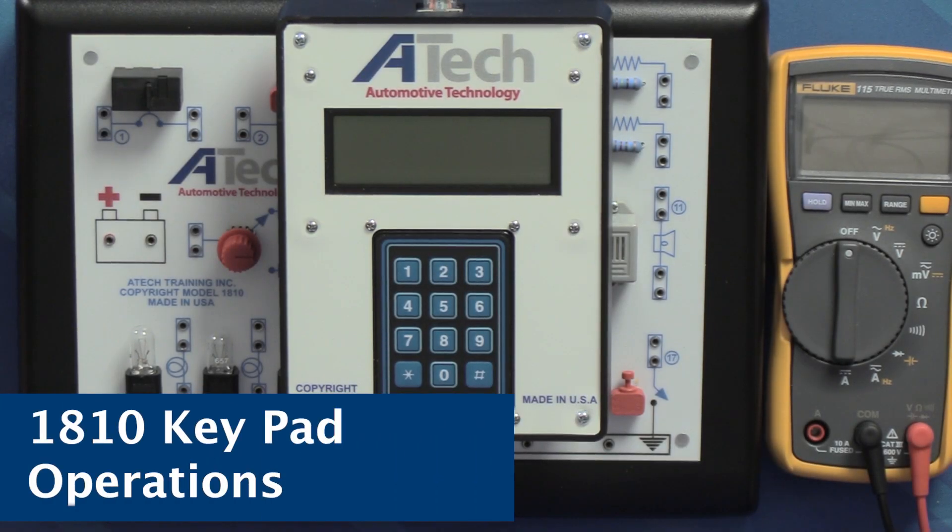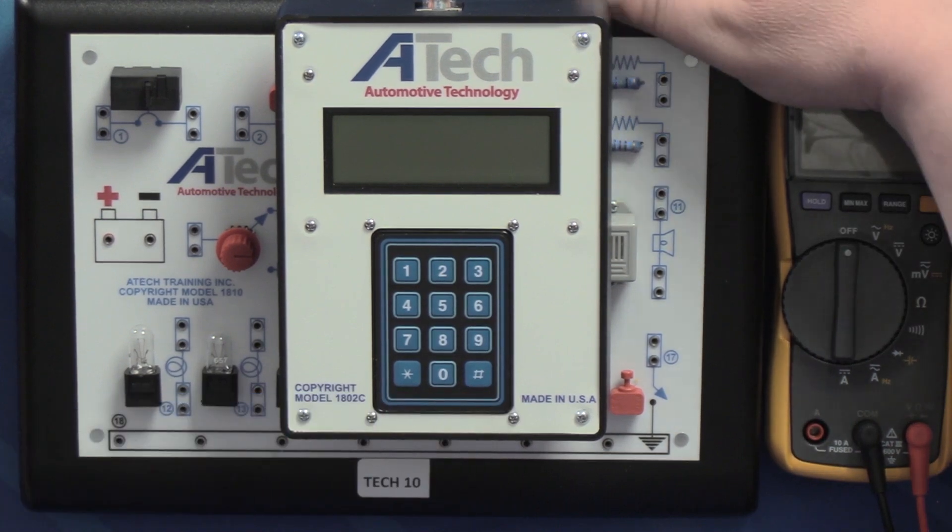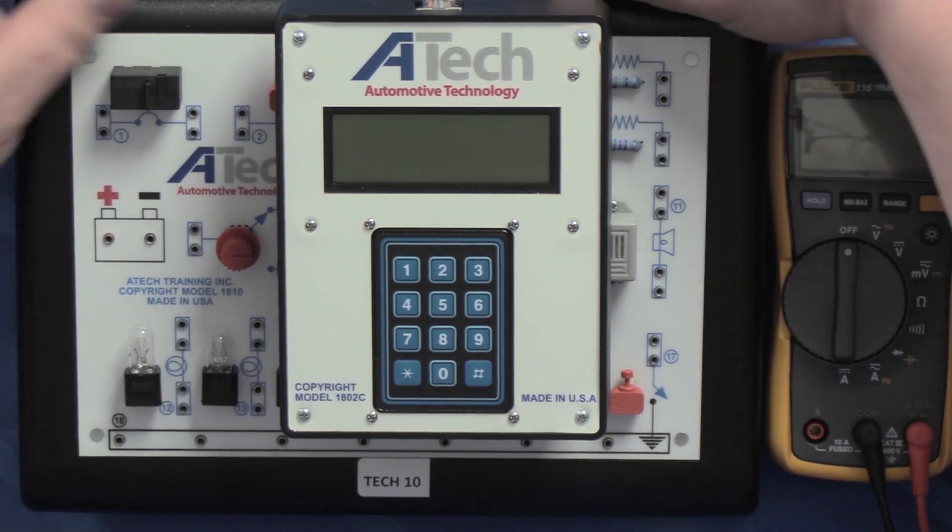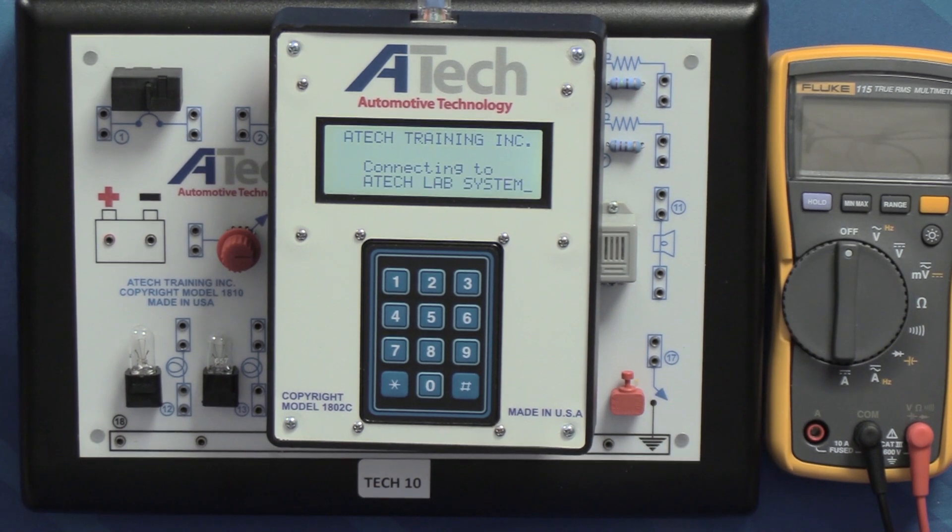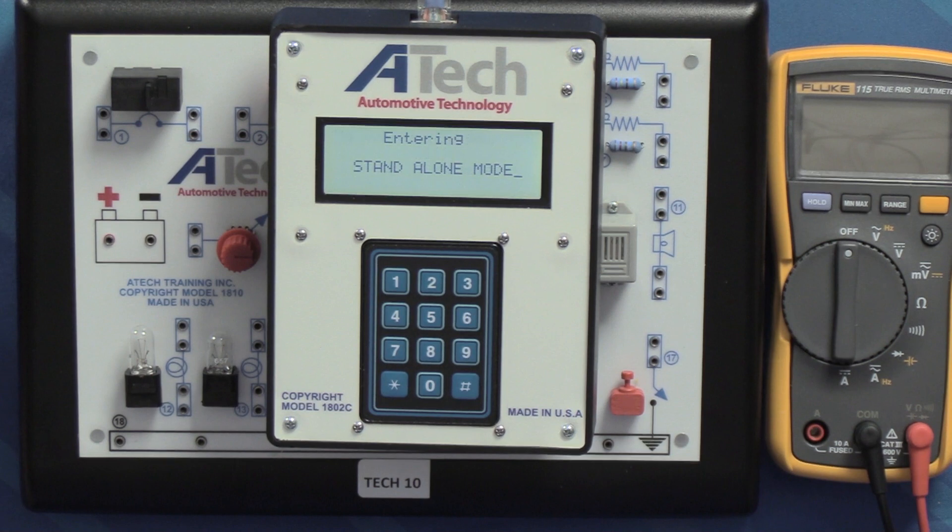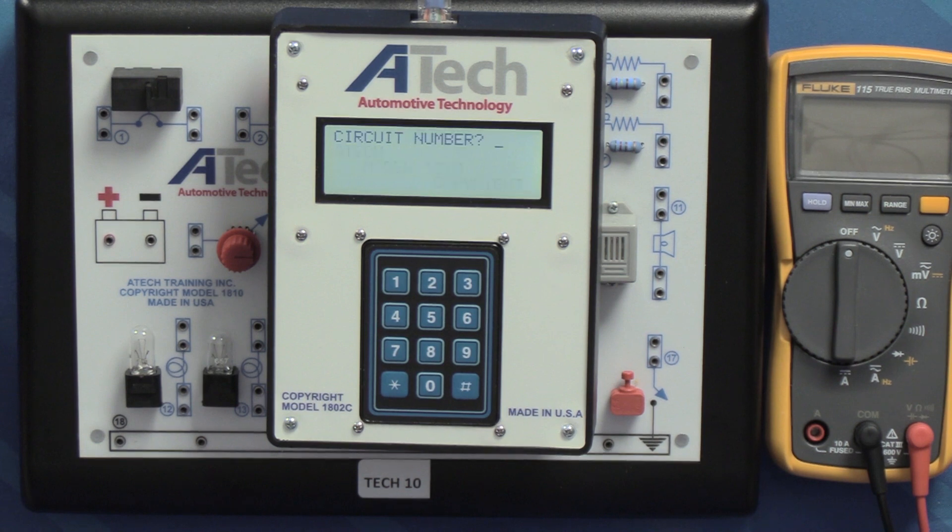Now that you have everything wired up, let's go ahead and power our unit on by utilizing the toggle switch on the back side, that's your master power switch. If your unit is connected up to the CMP system, the trainer will automatically connect with the CMP master computer and then it will prompt you to enter a student ID number. If it's not connected as pictured here, you'll see it'll jump right into standalone mode and then you're going to be asked to enter a circuit number.